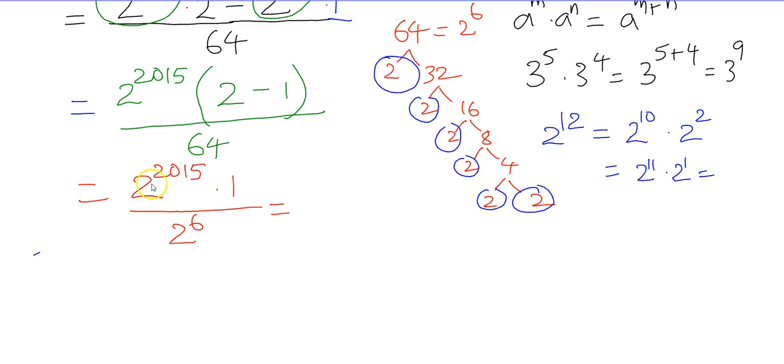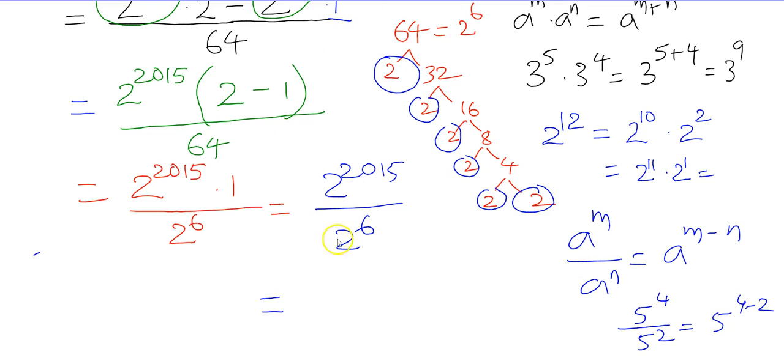Now we are left with 2 to the power of 2015 times 1 over 2 to the power of 6. That is, numerator is 2 to the power of 2015 over 2 to the power of 6. Here, I have to make use of the division property of exponents. It is like a to the power of m over a to the power of n gives you a to the power of m minus n. For example, if you have 5 to the power of 4 over 5 squared, it is going to be 5 to the power of 4 minus 2.